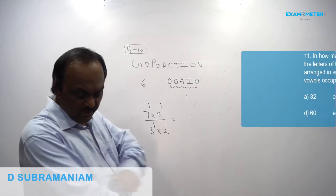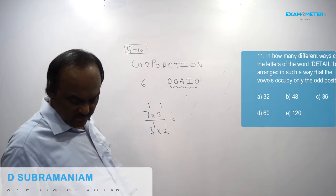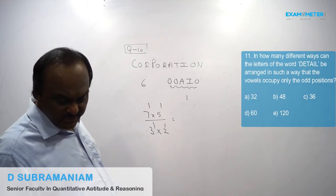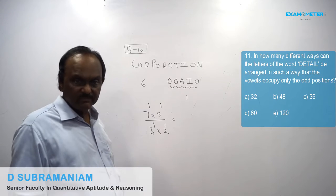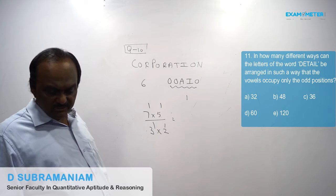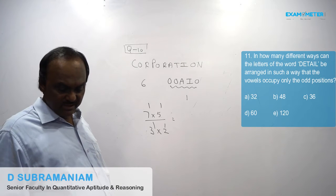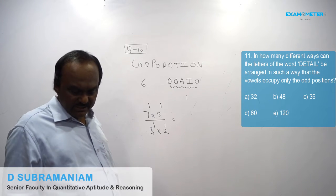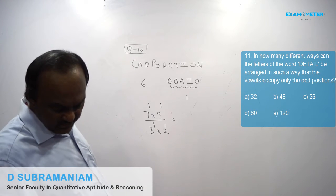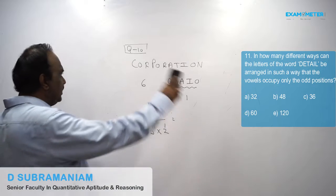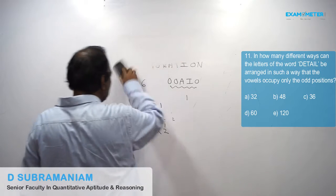Q11. In how many different ways can the letters of the word DTYPE be arranged such that vowels occupy only the odd positions?